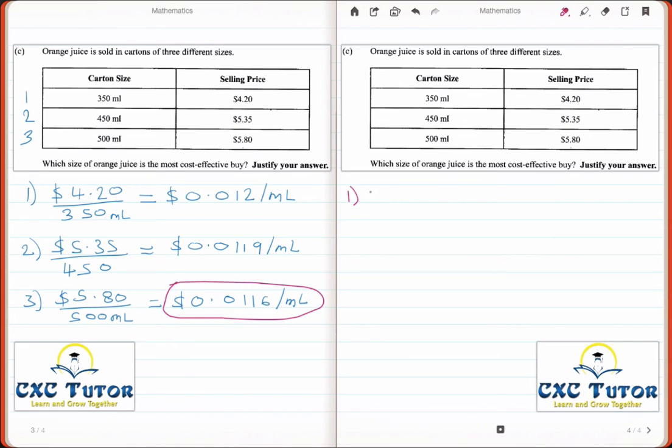So for the first juice, it contains 350 ml, and we divide by $4.20. That should give us a value of 83.3 milliliters per dollar.